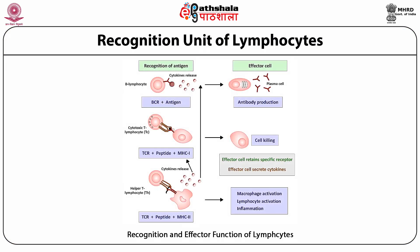The recognition and effector function of the three types of lymphocytes: B lymphocytes where BCR plus antigen results in antibody production; cytotoxic T lymphocytes where the TCR complex with MHC1 and processed peptide results in cell killing; and T helper cells where TCR plus processed peptide and MHC2 results in lymphocyte activation — meaning activation of both B and T lymphocytes — and also macrophage activation and inflammation.